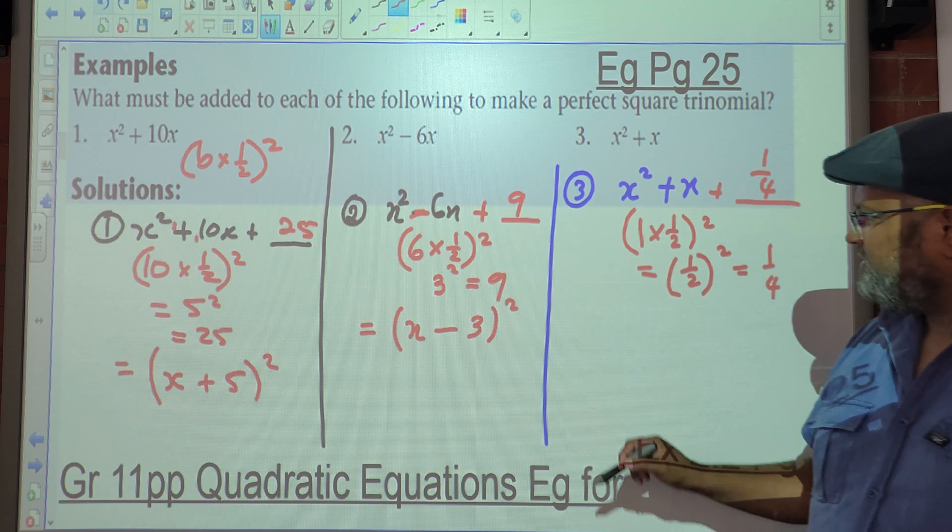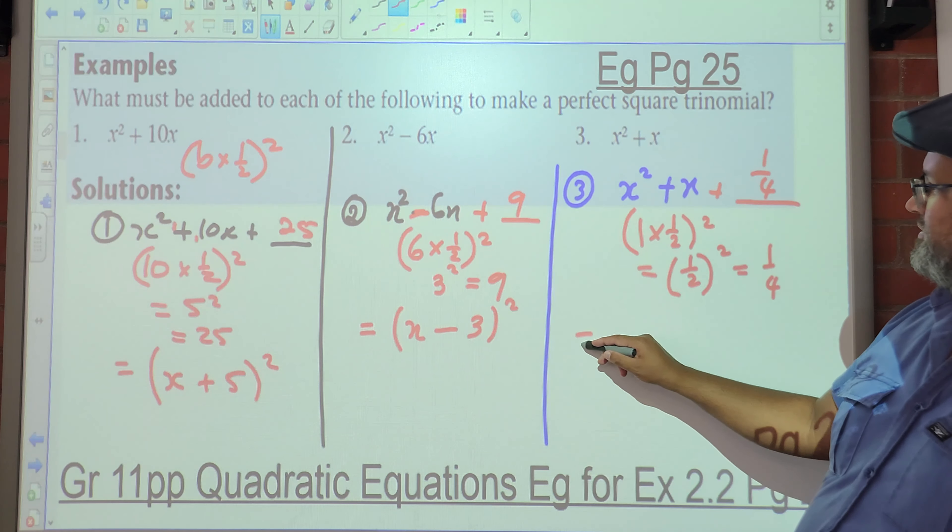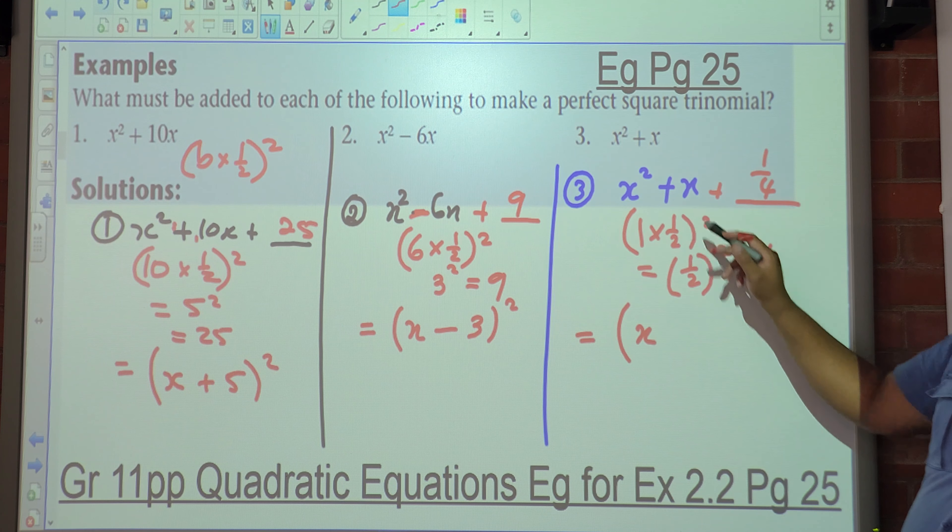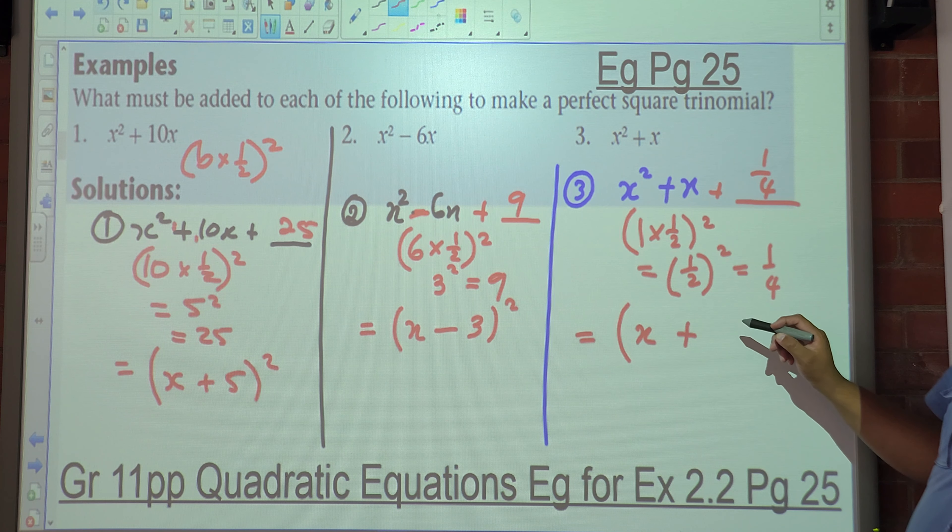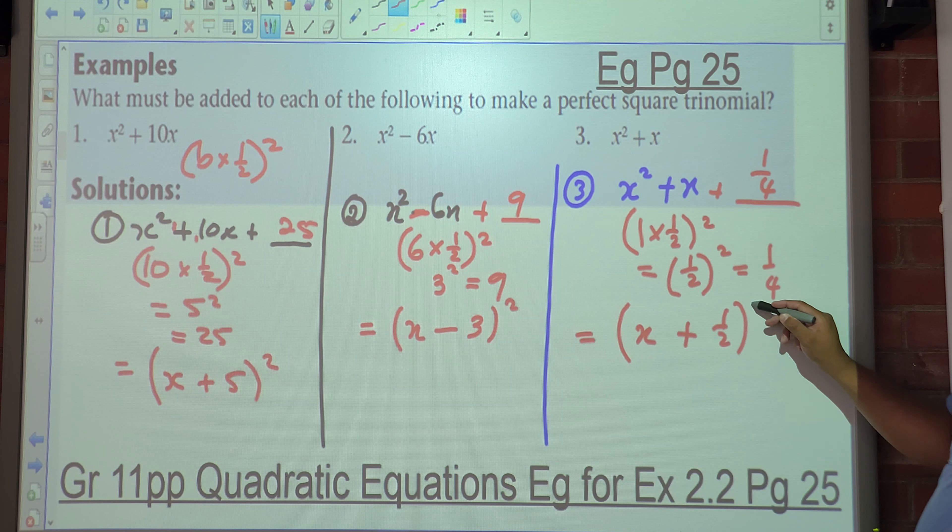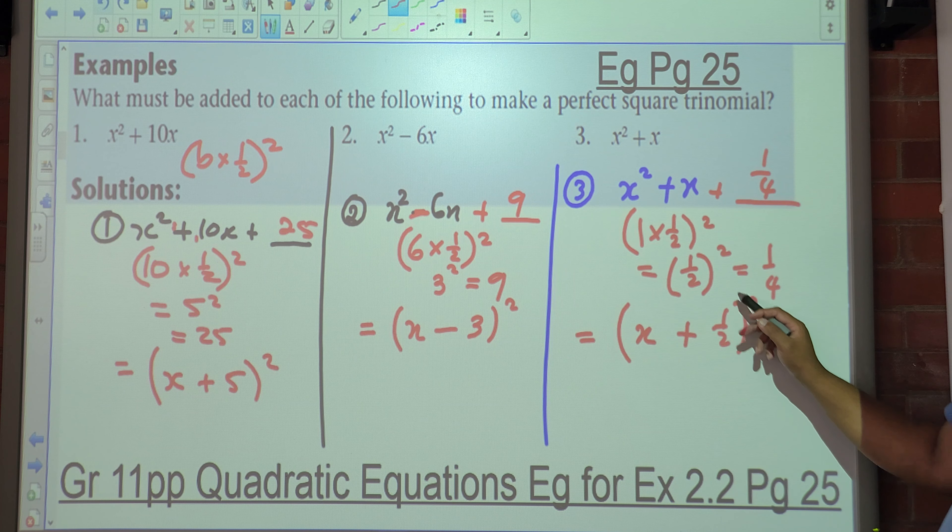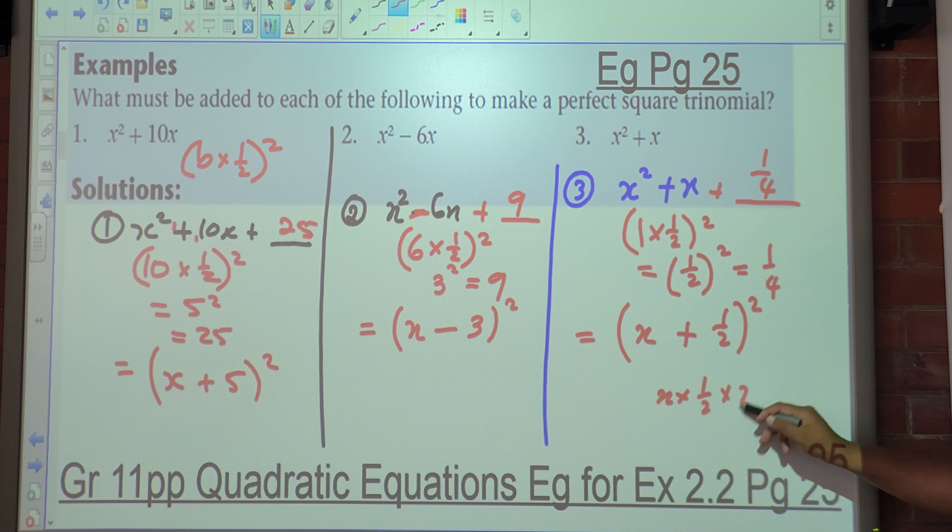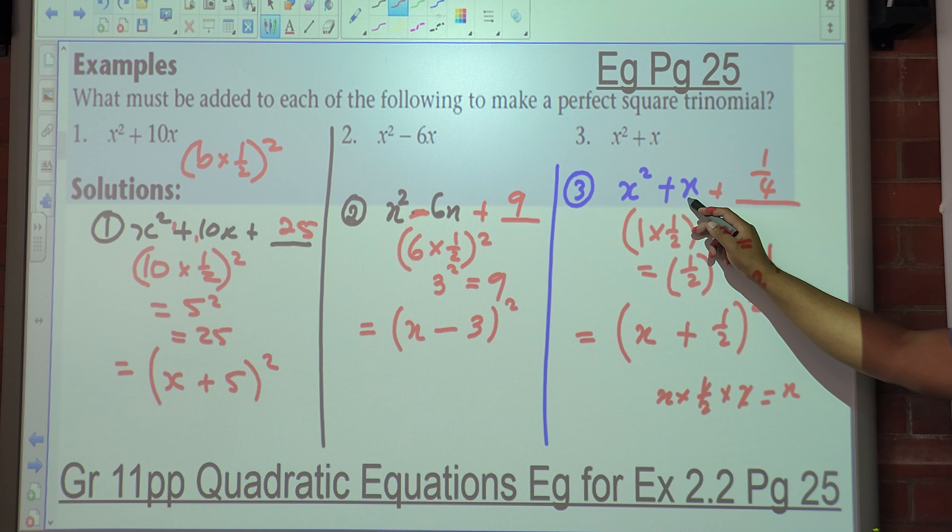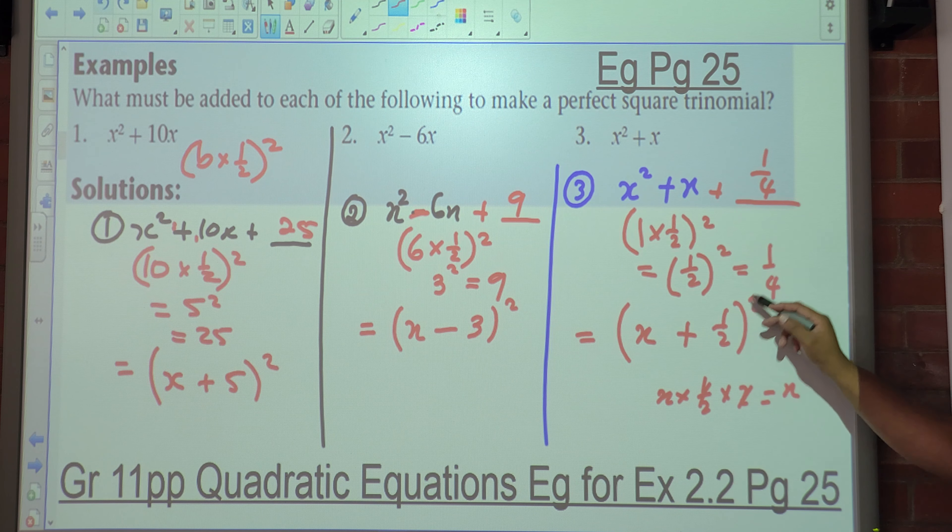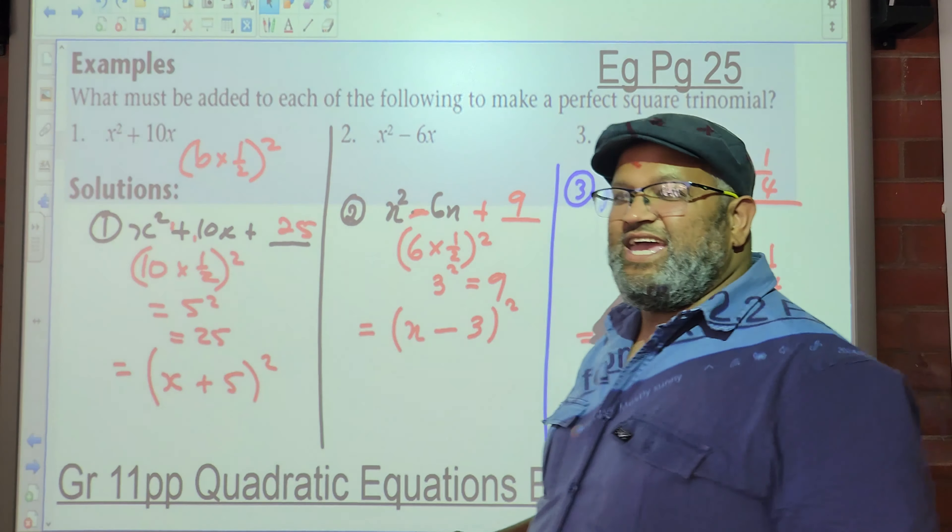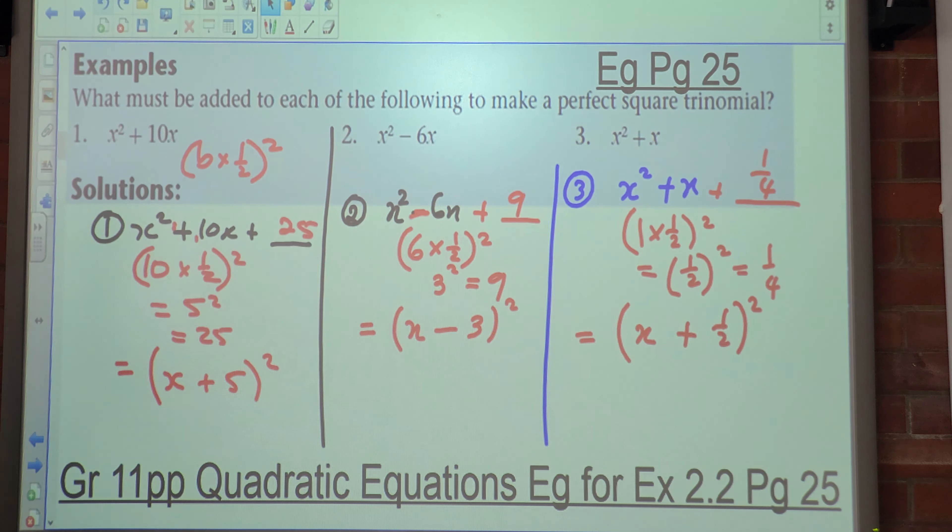Okay, you guys understand? So this can be written as (x + 1/2)². What is x²? x². What's x times half times two? x. And then half squared? Quarter. People, is there any confusion here? You're all okay with this?